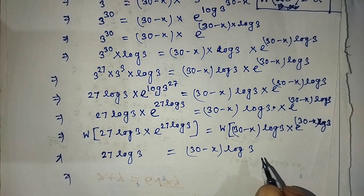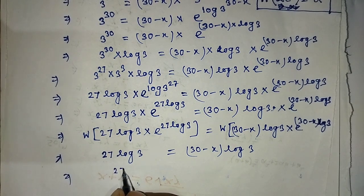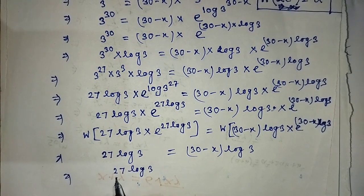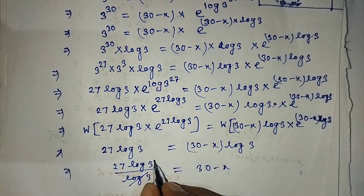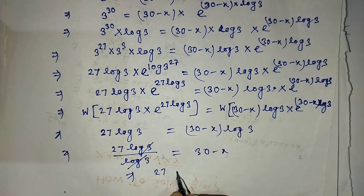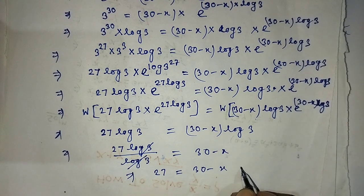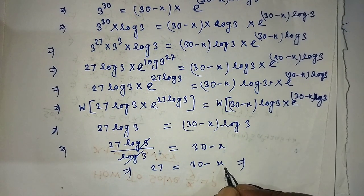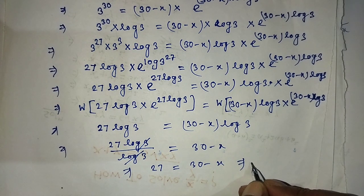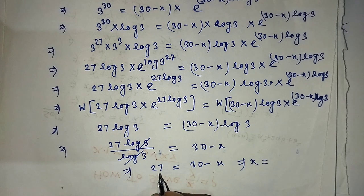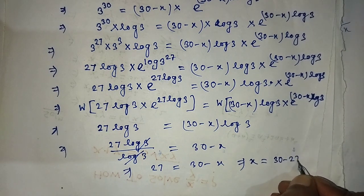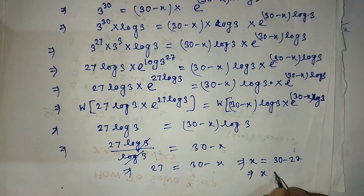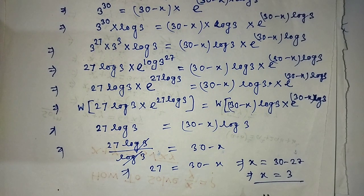After that, we transpose log 3 from the right side to the left side. So 27 log 3 over log 3 equals 30 minus x, and log 3 cancels, giving us 27 equals 30 minus x. Transposing x to the left and 27 to the right, we get x equals 30 minus 27, so the value of x is 3. If you like this video and this trick, please support me and subscribe to my channel. Thank you, bye bye!